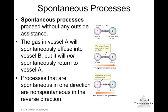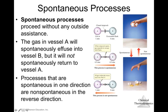Processes that are spontaneous in one direction are non-spontaneous in the reverse direction. For example, dropping two eggs and having them break is spontaneous, but the reverse — reassembling the yolk and shell perfectly — is not spontaneous. All processes that are spontaneous have a non-spontaneous reverse.